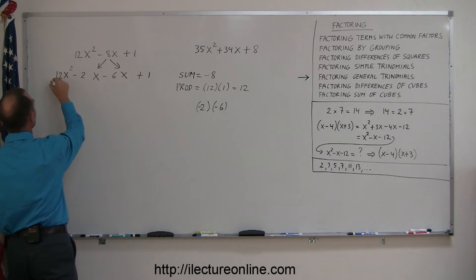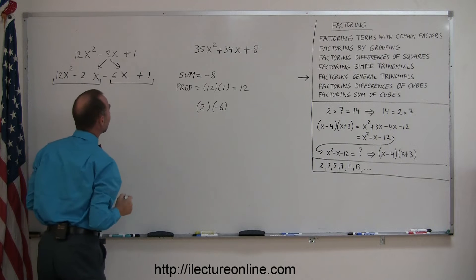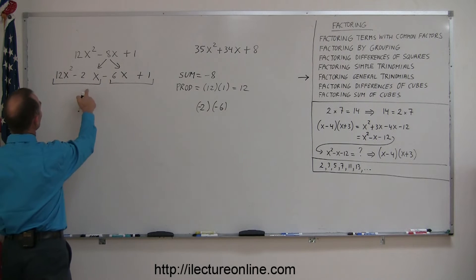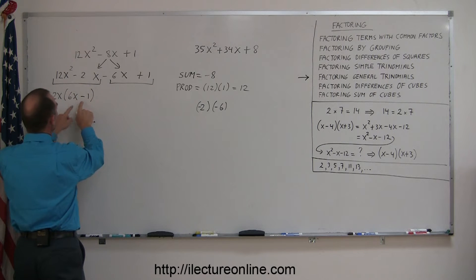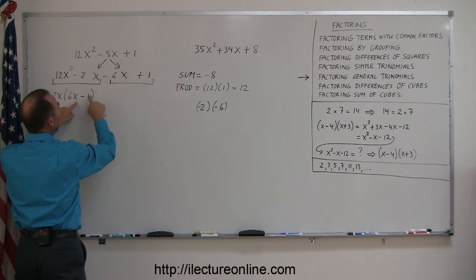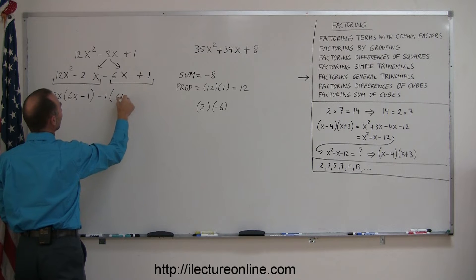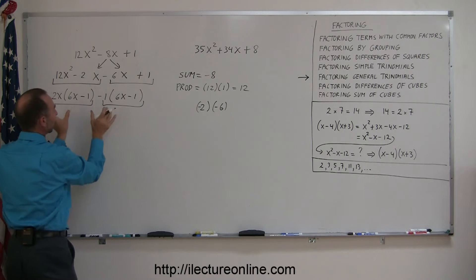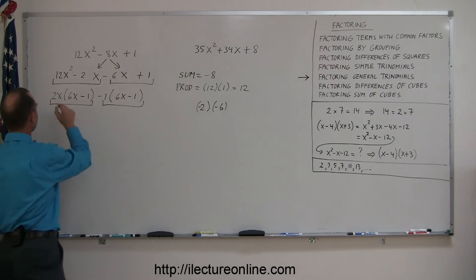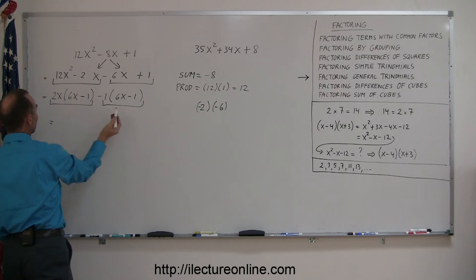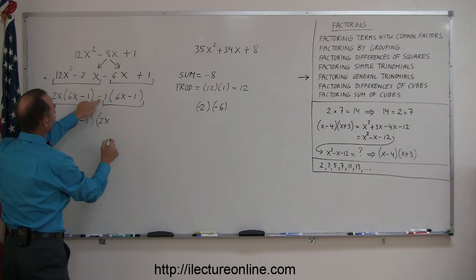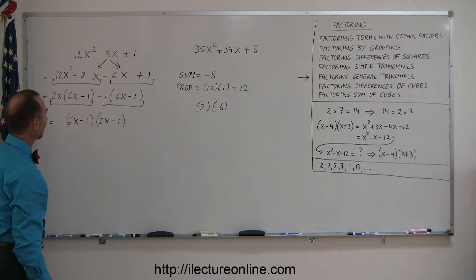Once you've written it that way, go ahead and group them. Factor out a common factor from each group. In the first group, we factor out 2x and we're left with 6x minus 1. In the second group, since we want to end up with the same 6x minus 1, we factor out a negative 1, giving minus 1 times (6x minus 1). Now we factor out 6x minus 1 from both terms, and we're left with (6x minus 1)(2x minus 1) — the factored form.